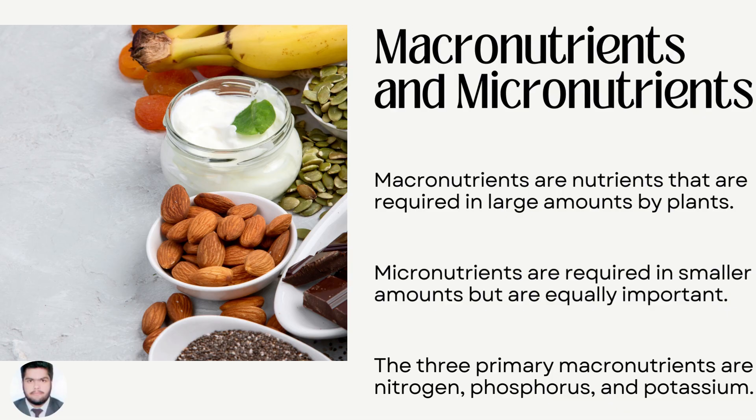Macronutrients and Micronutrients: Macronutrients are nutrients that are required in large amounts by plants. Micronutrients are required in smaller amounts but are equally important. The three primary macronutrients are nitrogen, phosphorus and potassium.